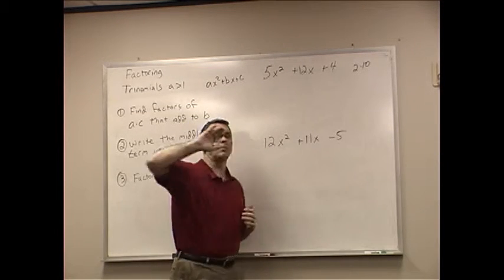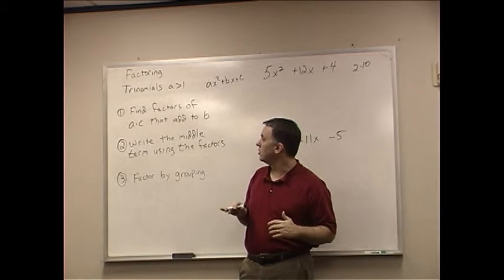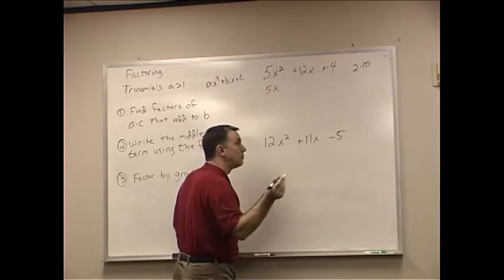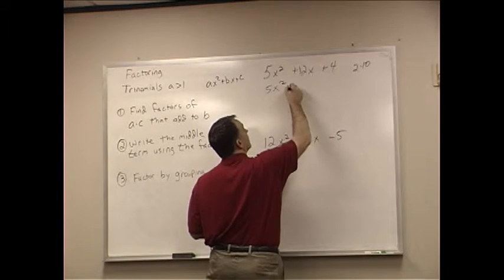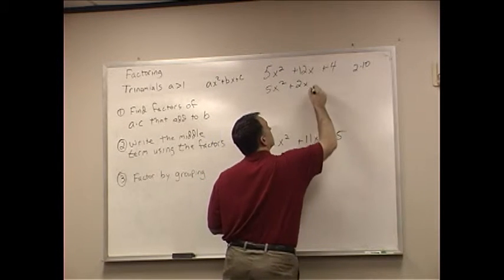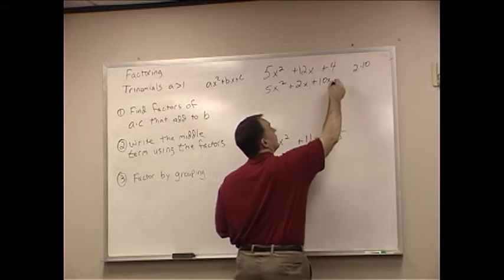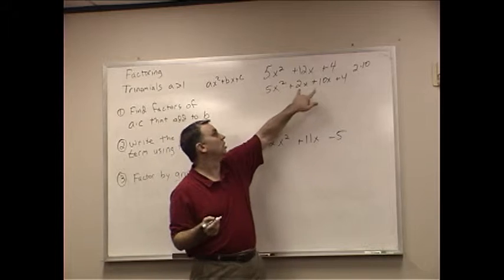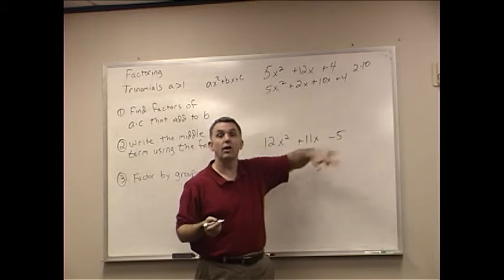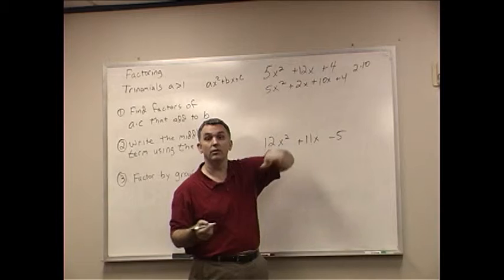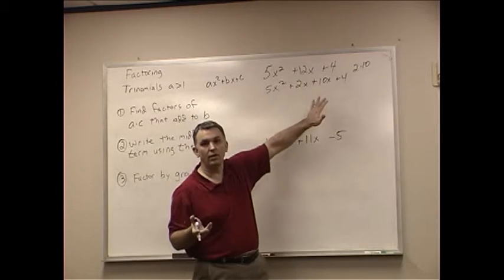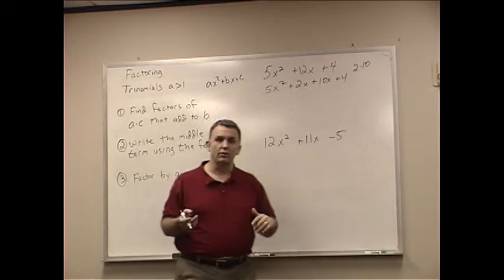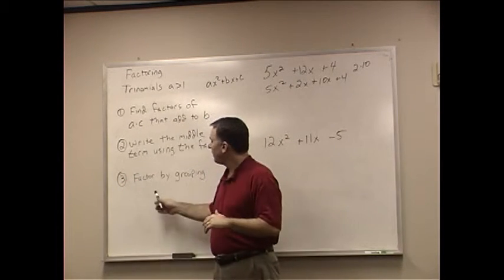Now, step 2. Write the middle term using the factors. So now I'm going to rewrite the whole problem. 5X to the second plus 2X plus 10X plus 4. Notice how I wrote the 2 and the 10 in there. And also notice that 2X plus 10X is 12X. So we didn't change the value at all. We just ended up rewriting the 12X so that it looks different. And now I say factor by grouping.